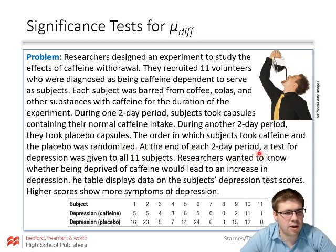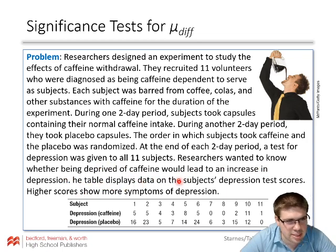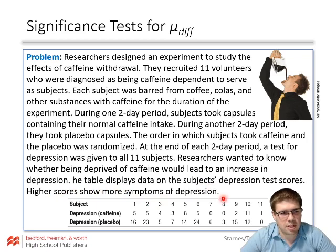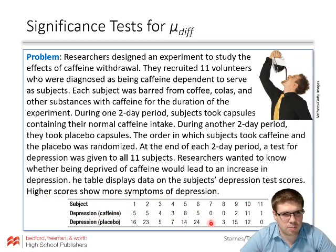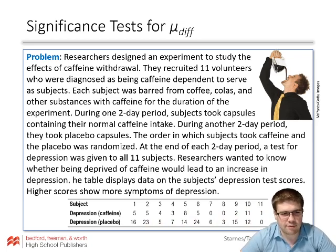At the end of each two-day period, a depression test was given to all 11 subjects. Researchers wanted to know whether being deprived of caffeine would lead to an increase in depression. The table displays each subject's depression test scores — higher scores show more symptoms of depression — with scores under caffeine and under placebo. Each row is one person with two different depression scores, and it looks like most subjects felt more depressed with the placebo, so we'll see if we can find significant evidence of that.